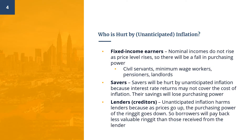The redistribution effects of inflation depend on whether inflation was expected or not. Let's begin by looking at who is potentially hurt or harmed when there is unanticipated inflation. The first group is fixed income earners. For this group, their nominal incomes do not rise as the price level rises, so there will be a fall in their real income or purchasing power when inflation occurs.